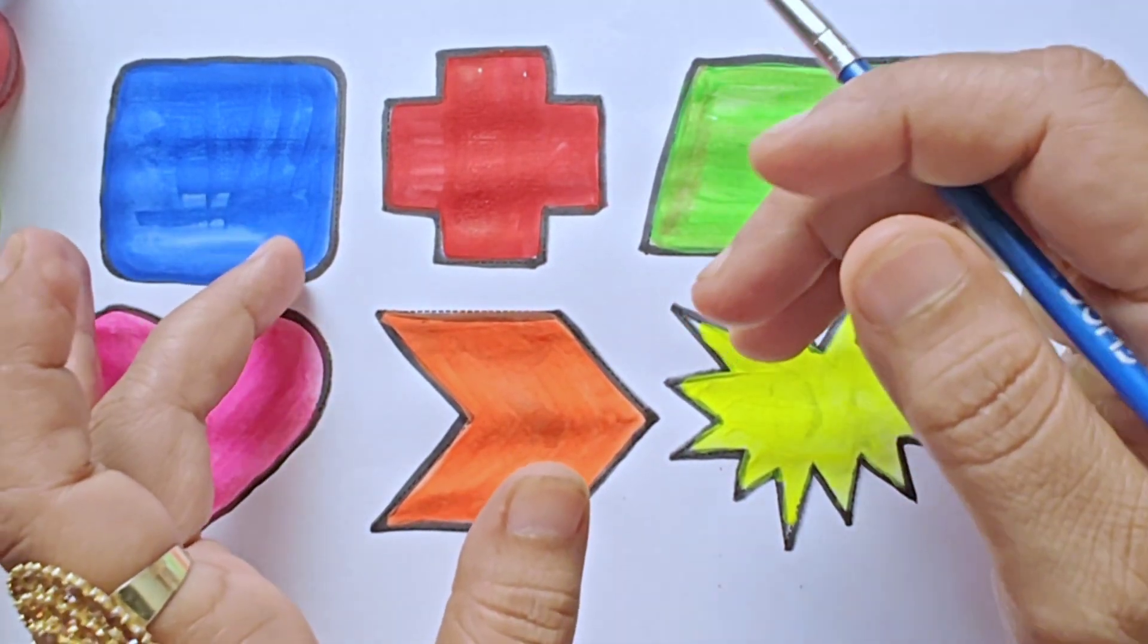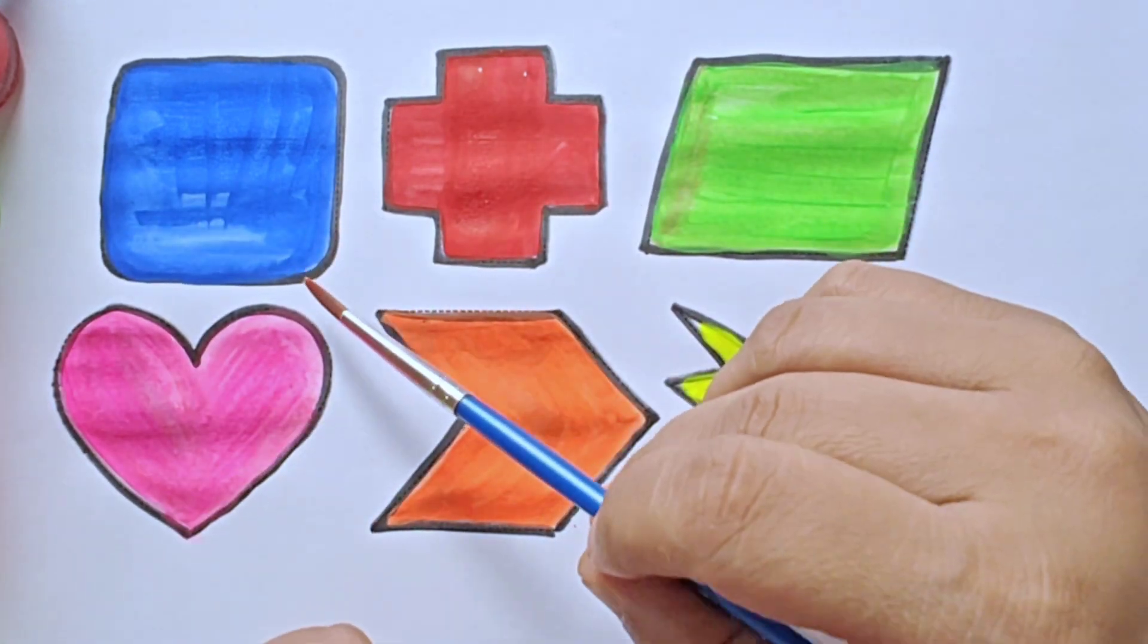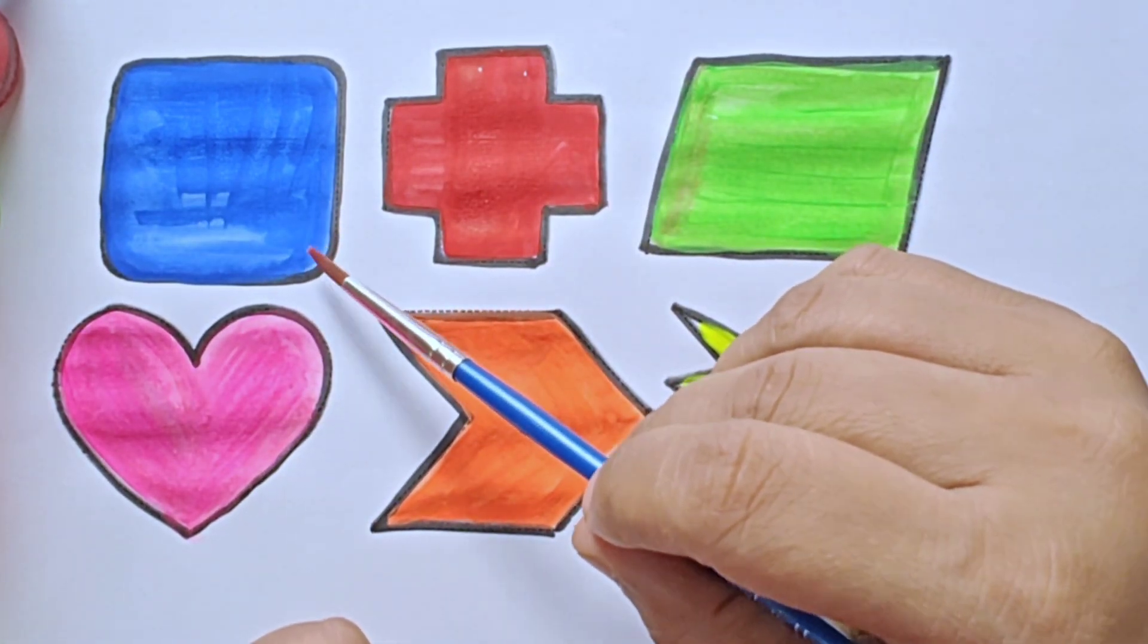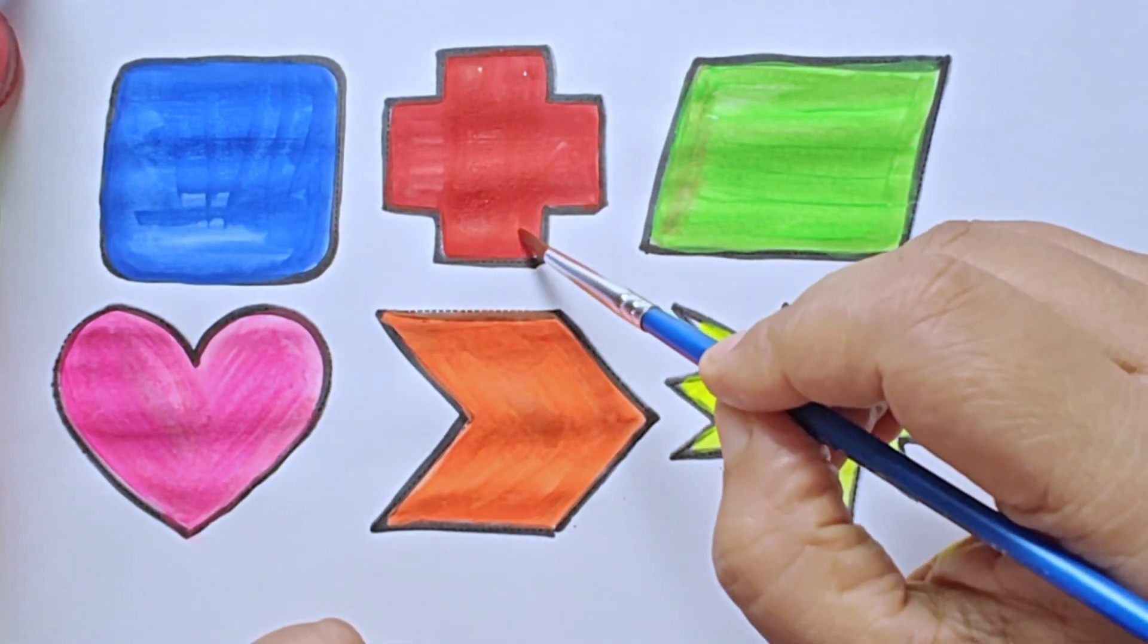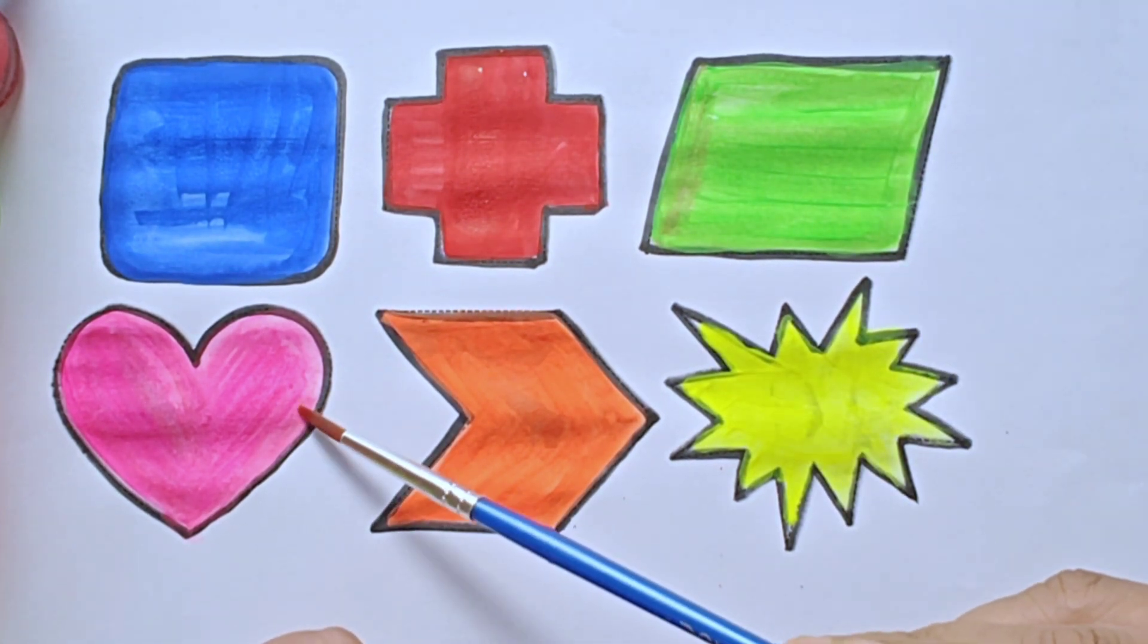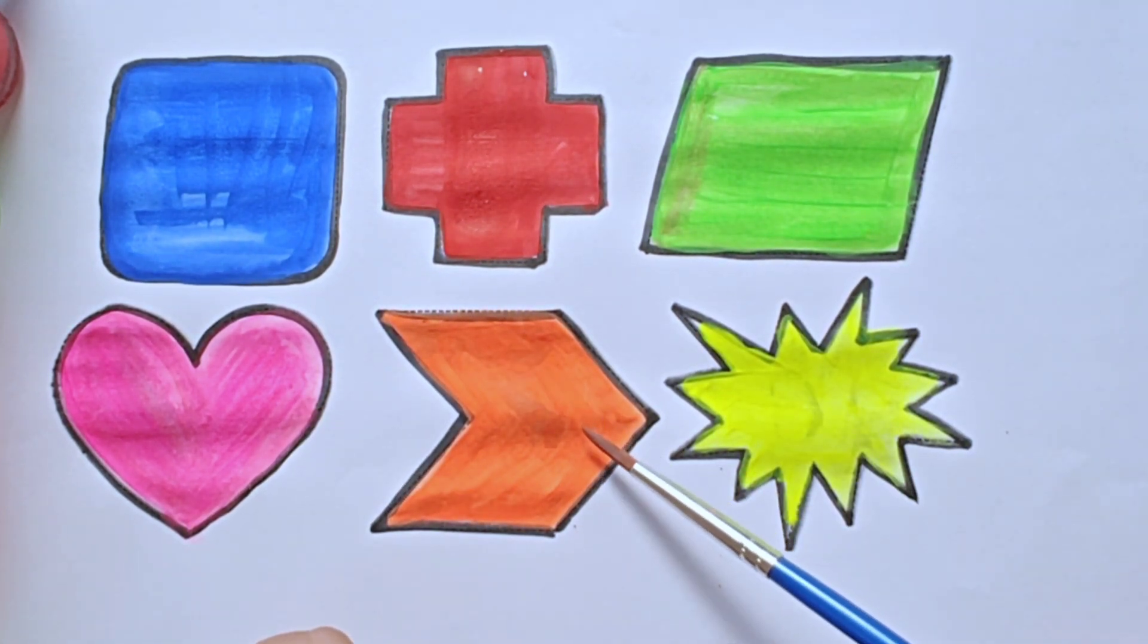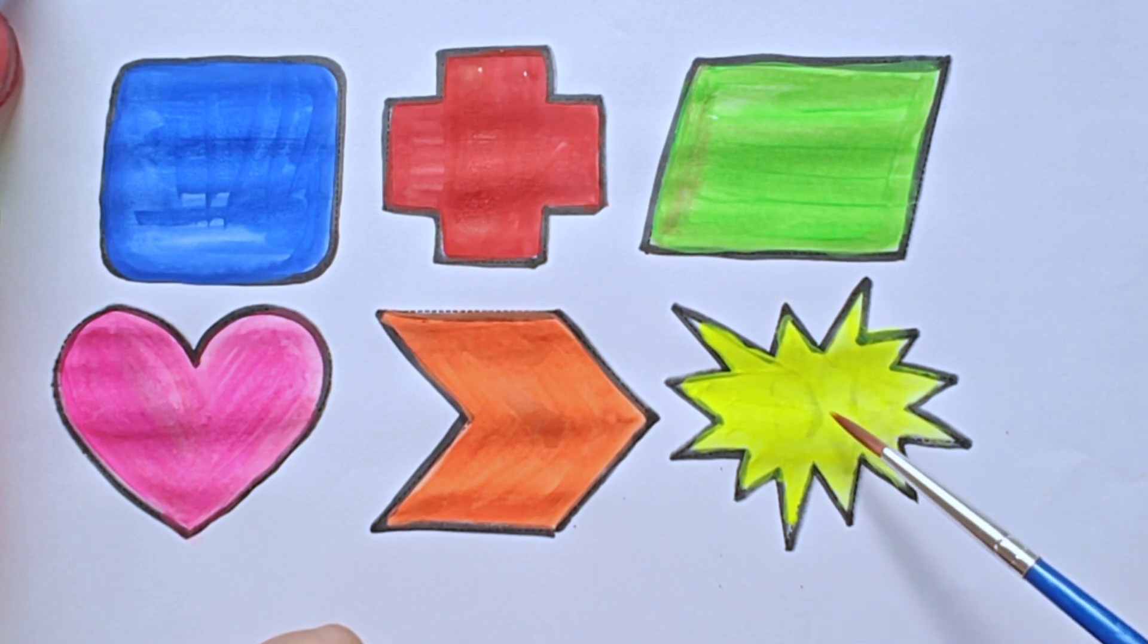Kids, let us know about the color name and shape name once again. This is rounded corner square blue color, cross red color, parallelogram green color, heart pink color, chevron arrow orange color, explosion yellow color.